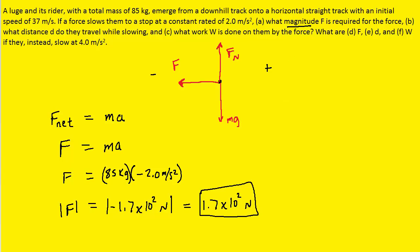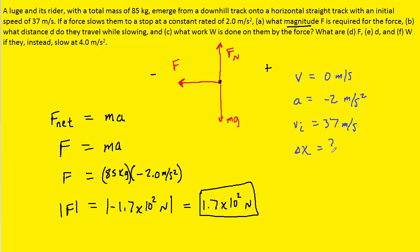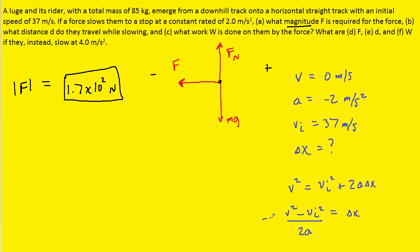For part B, one way of solving it would be to use one of the equations from kinematics. We know that the final velocity of the object is 0 meters per second, the acceleration is negative 2 meters per second squared, and the initial velocity is 37 meters per second. We're looking for the distance traveled — in essence, delta x. The equation from kinematics that relates these four variables allows us to solve for delta x by subtracting v-initial squared and dividing both sides by 2 times the acceleration.